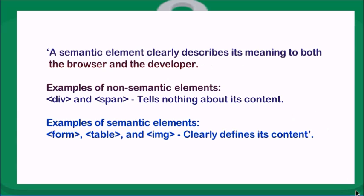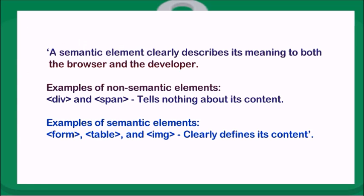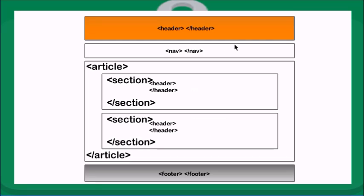To follow along with this tutorial, I have my text editor open, within which I will be typing the different elements as we discuss them. The elements we are going to look at are the header element, the navigation element, the sections element, the article element, and the footer element. Before we get into the header element, let's look at an overview of what we are trying to do. Take an article on a web page — we have a header, navigations, an article with different sections, and a footer.